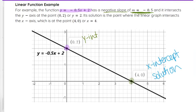There are many different names for it, but it is the solution of the graph where the y-coordinate is 0 and the x-coordinate is whatever number it falls on on the x-axis. In this case, x = 4 would be a solution to the equation y = -0.5x + 2.